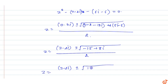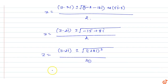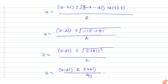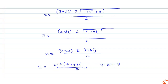Now finding the square root of (minus 15 plus 8 iota): this works out to (1 plus 4 iota). So Z equals (3 minus 2 iota) plus or minus (1 plus 4 iota), all upon 2.